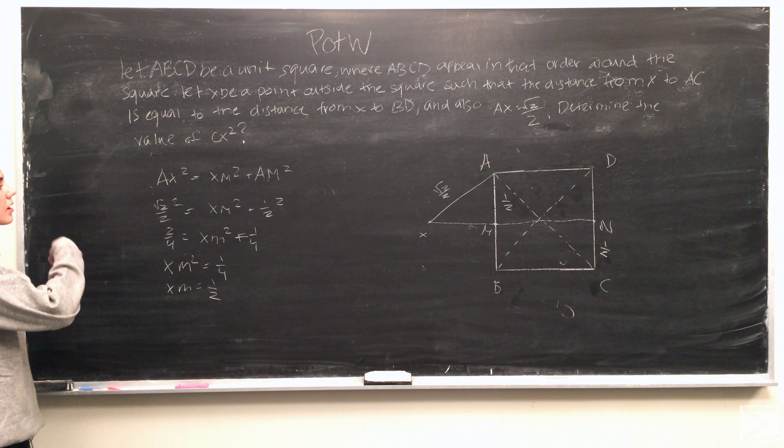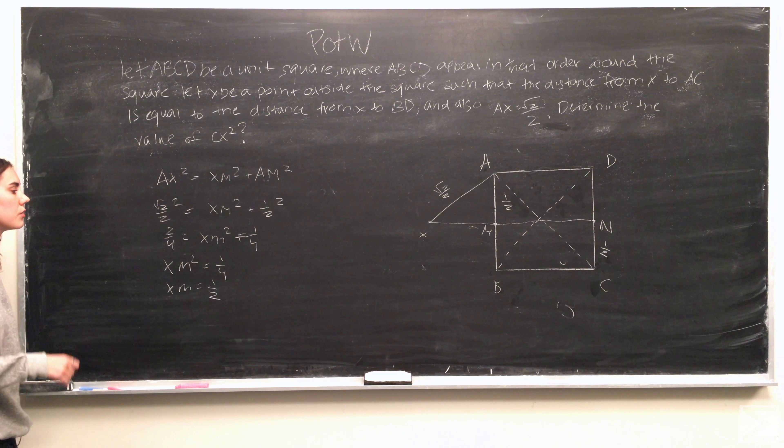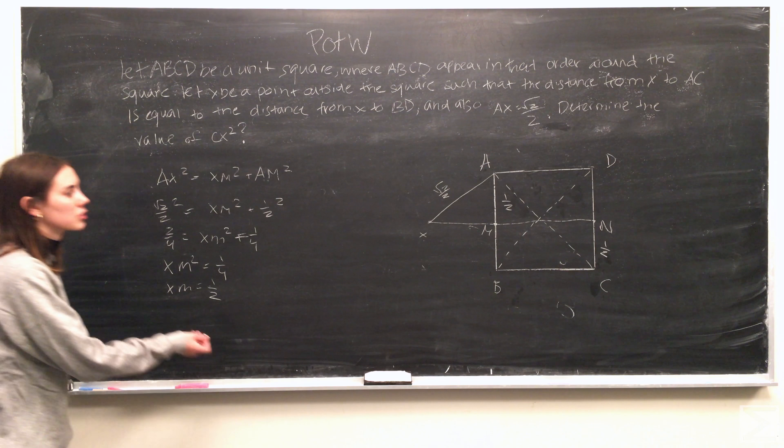So plugging in for the Pythagorean theorem, we get square root of 2 over 2 squared equals xm squared plus 1 half squared. And solving that out, we get that xm is equal to 1 half.